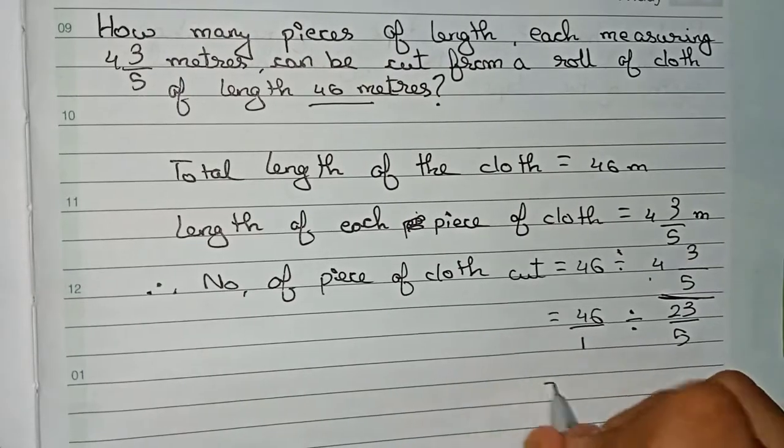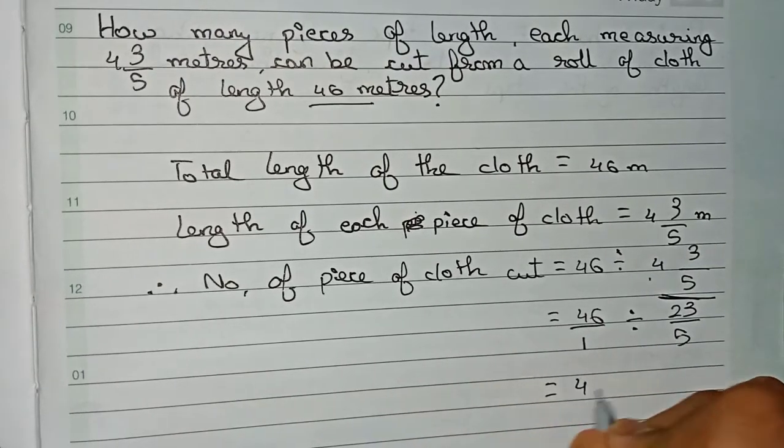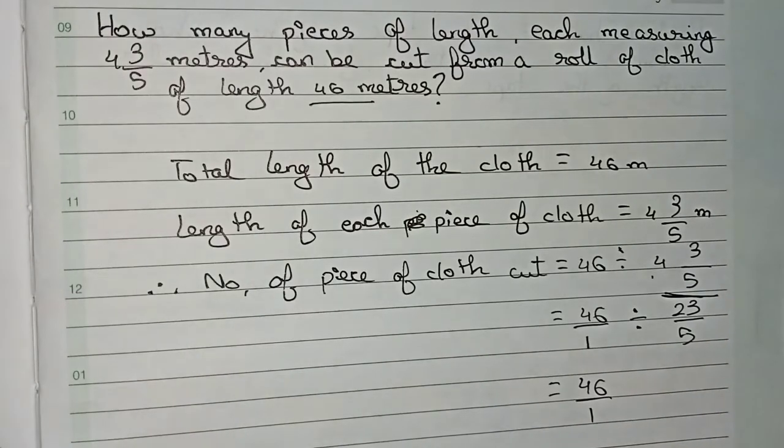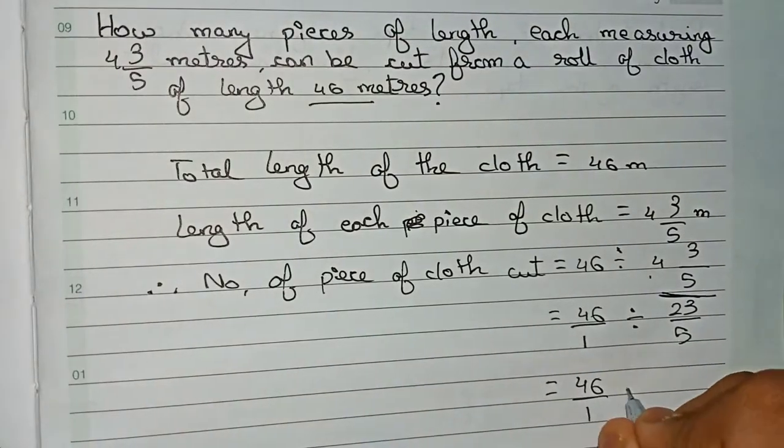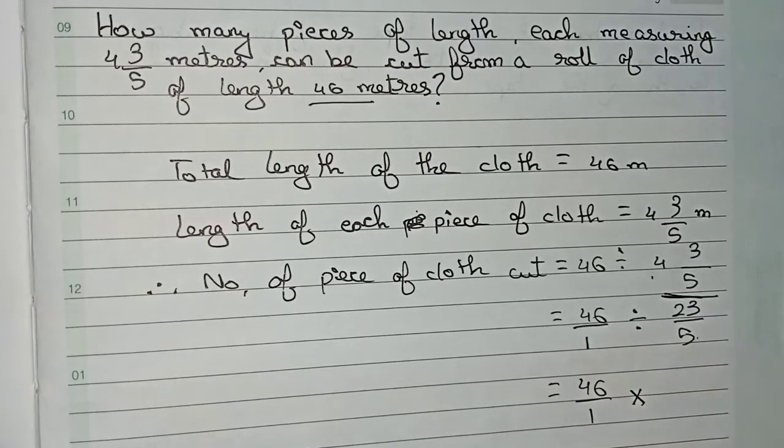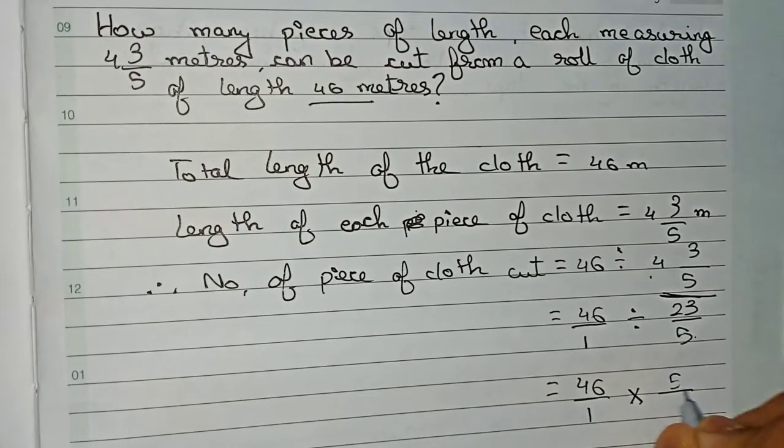Now I write 46/1. I have to do the reciprocal of this number, and the division will become multiplication. So first we write the multiplication sign, and reciprocal means 5 will go up and 23 will come down. So it becomes 5/23.